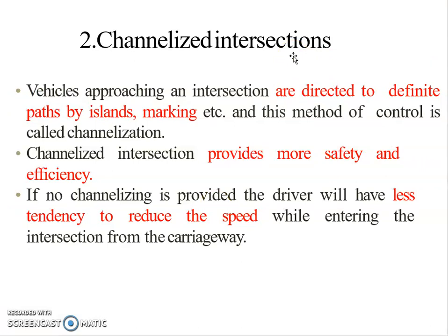The second classification is channelized intersections. In channelized intersections, traffic is guided along a definite path using islands and road markings. This channelization method of controlling traffic makes intersections more safe and efficient.